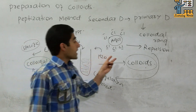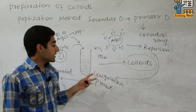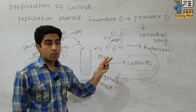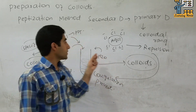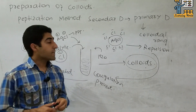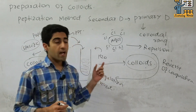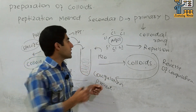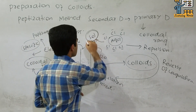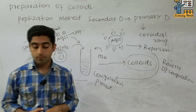The electrolyte prevents the coagulation of AgCl, so the precipitate particles disintegrate and particle size reduction occurs. The particles are now in the colloidal range and we call them colloidal particles. An AgCl sol is formed — that's all about the peptization method.